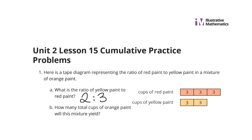So this is two yellow to three red. Pay attention to the order — everything in the question made you want to maybe do three to two, but it's two to three because the question says yellow to red. Now, how many total cups of orange paint will this mixture yield? Three, six, nine, twelve, fifteen cups of orange paint.